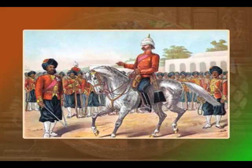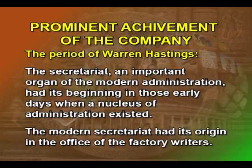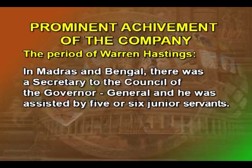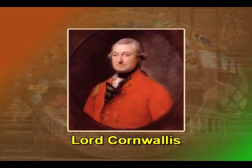These were the skeletal functions of a slowly emerging police state. The Secretariat, an important organ of modern administration, had its beginning in those early days when a nucleus of administration existed. The modern secretary had its origin in the office of the factory writers. In Madras and Bengal, there was a secretary to the council of the Governor-General, assisted by five or six junior servants. This structure, created by Hastings, was perfected by his successor, Lord Cornwallis.